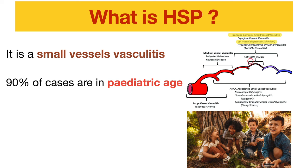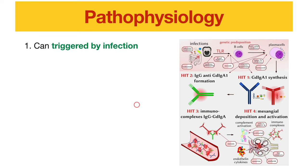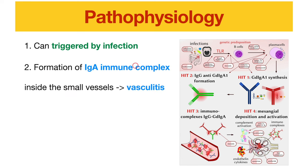HSP is small vessel inflammation of the blood vessels. 90% of cases are in the pediatric age — most are children. The incidence is around 3 to 27 per 100,000. The pathophysiology is an immune process triggered by infection; eventually the body forms IgA immune complexes inside the small vessels, leading to inflammation and vasculitis.